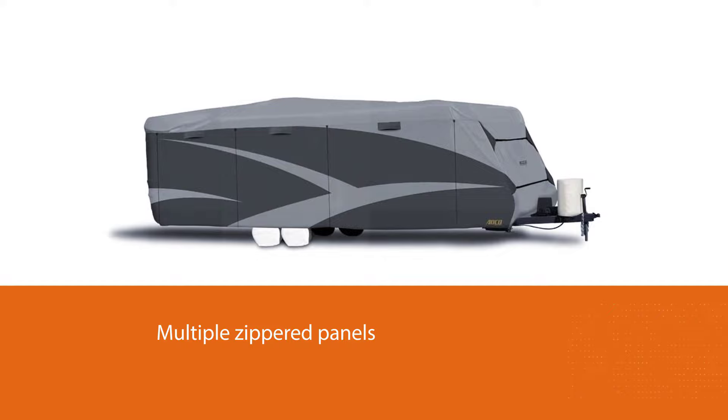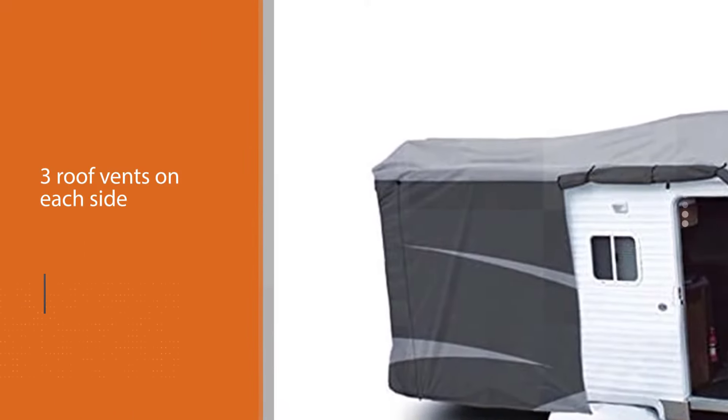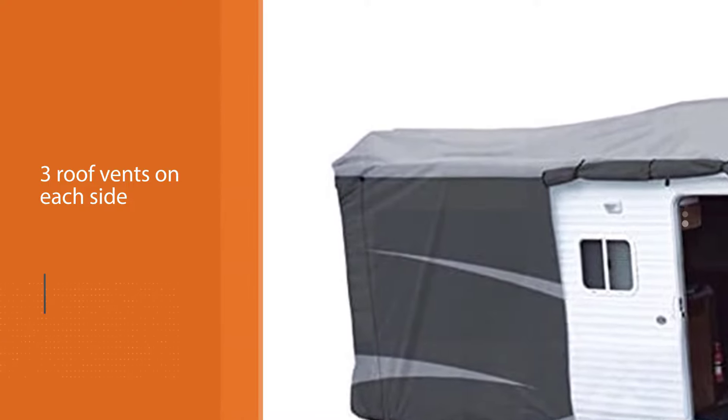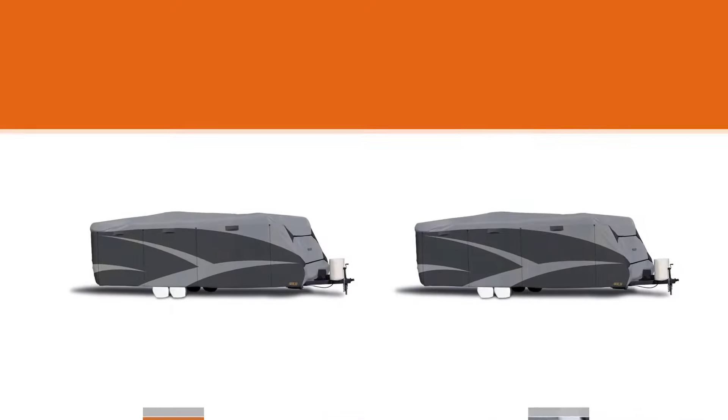It's got an SFS Aqua Shed top panel and triple-layer polypropylene sides with multiple zippered panels for access to your RV while it's covered. The SFS Aqua Shield has multiple layers that repel water but still maintain its breathability.